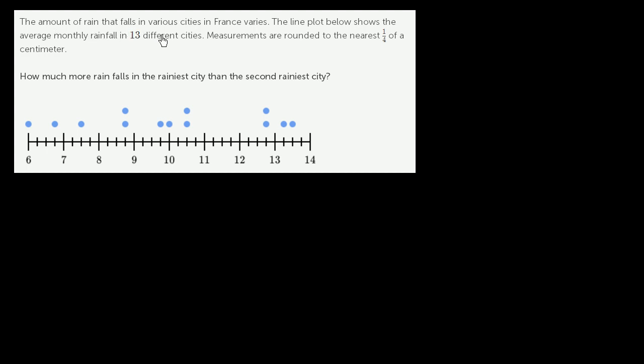The amount of rain that falls in various cities in France varies. The line plot below shows the average monthly rainfall in 13 different cities. Measurements are rounded to the nearest 1/4 of a centimeter.